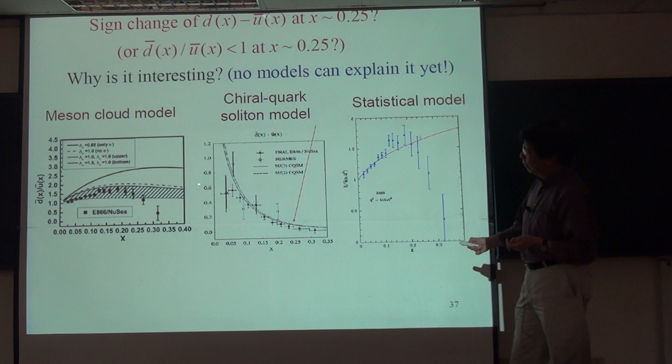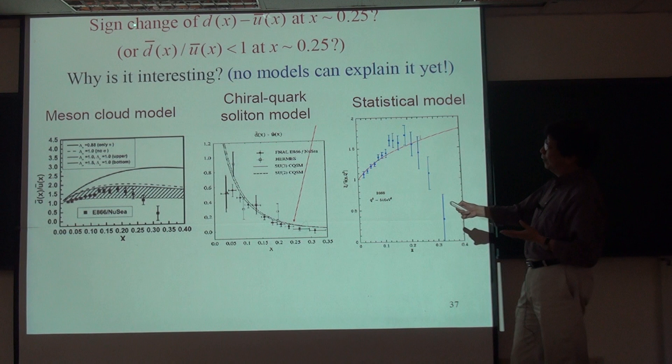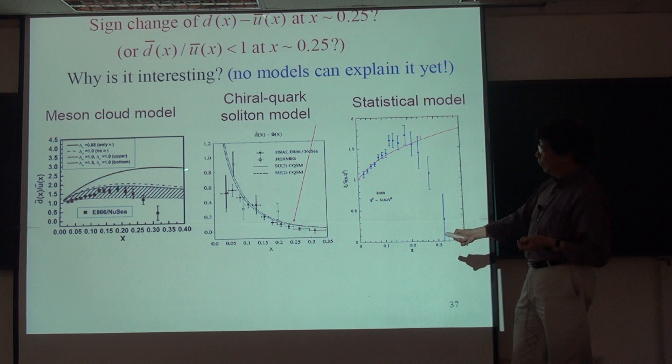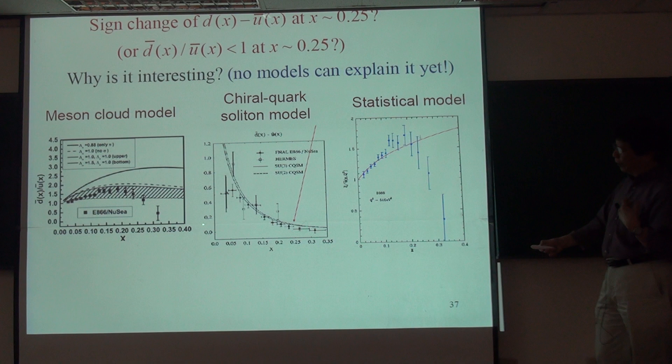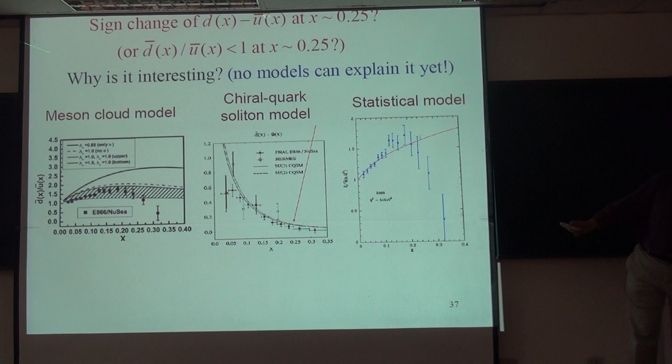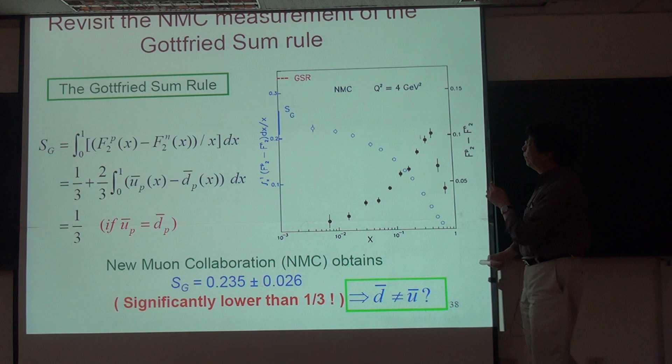So why is this interesting? Because there's no theoretical model which can explain this. All the theoretical model which attempt to explain this flavor asymmetry as a function of x is predicting that this ratio can never drop below one. So D-bar is always greater than U-bar. So this just shows some examples of the theoretical model.